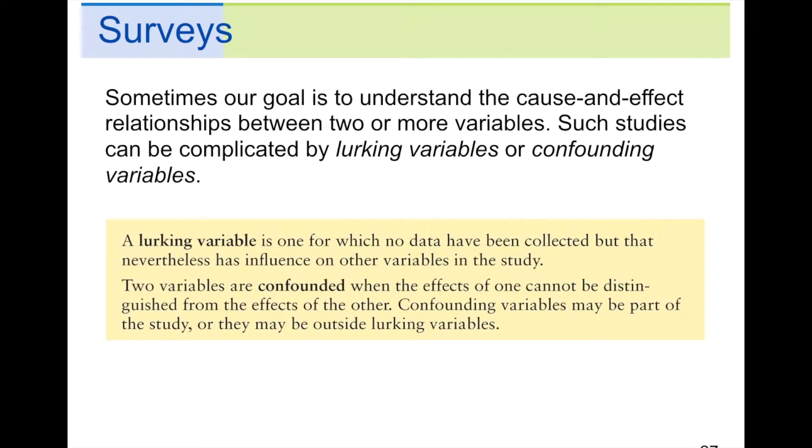Sometimes our goal is to understand the cause and effect relationships between two or more variables. Such studies can be complicated by lurking variables or confounding variables as we mentioned before. A lurking variable is one for which no data have been collected but nevertheless has an influence on other variables in the study. Two variables are confounded when the effects of one cannot be distinguished from the effects of another. Confounding variables may be part of the study or they may be outside lurking variables. So if you remember that 50 science misconceptions video, there may have been a correlation between corndog sales and heat but the lurking variable in that case was the state fair.